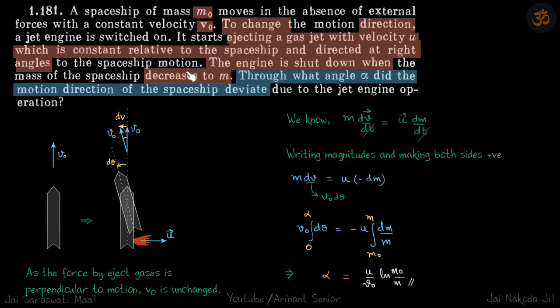The engine is shut down when the mass of the spaceship is reduced to m. We need to find how much angle it has turned by that time. So first things first, the force on the rocket is perpendicular to the direction of motion.